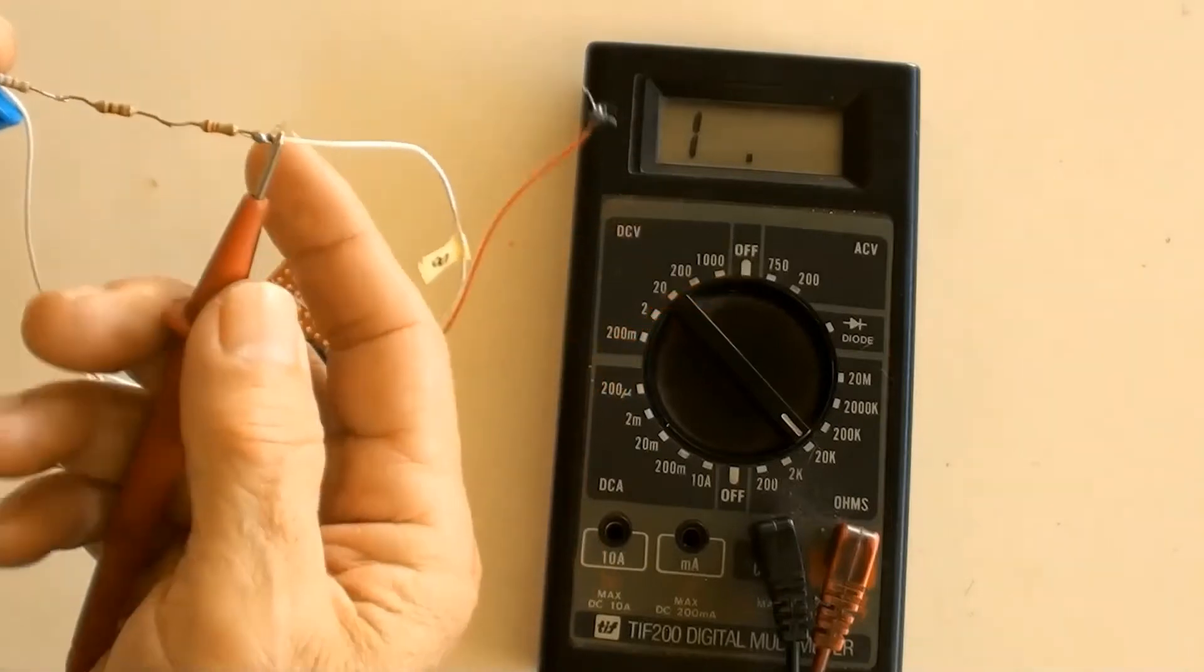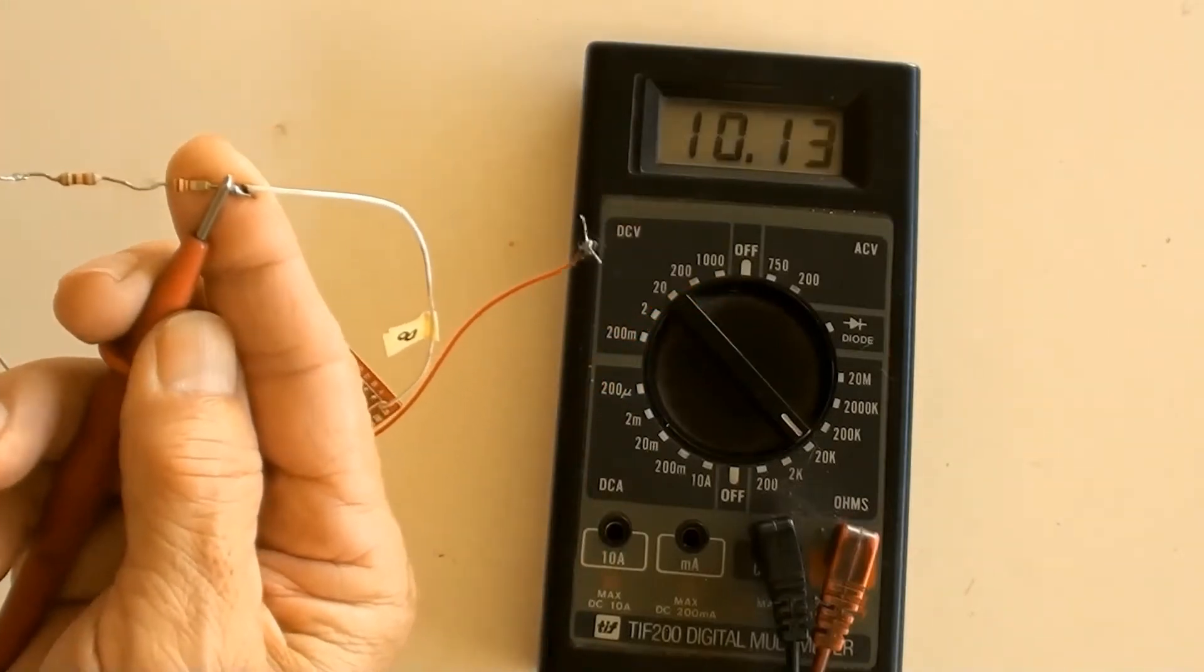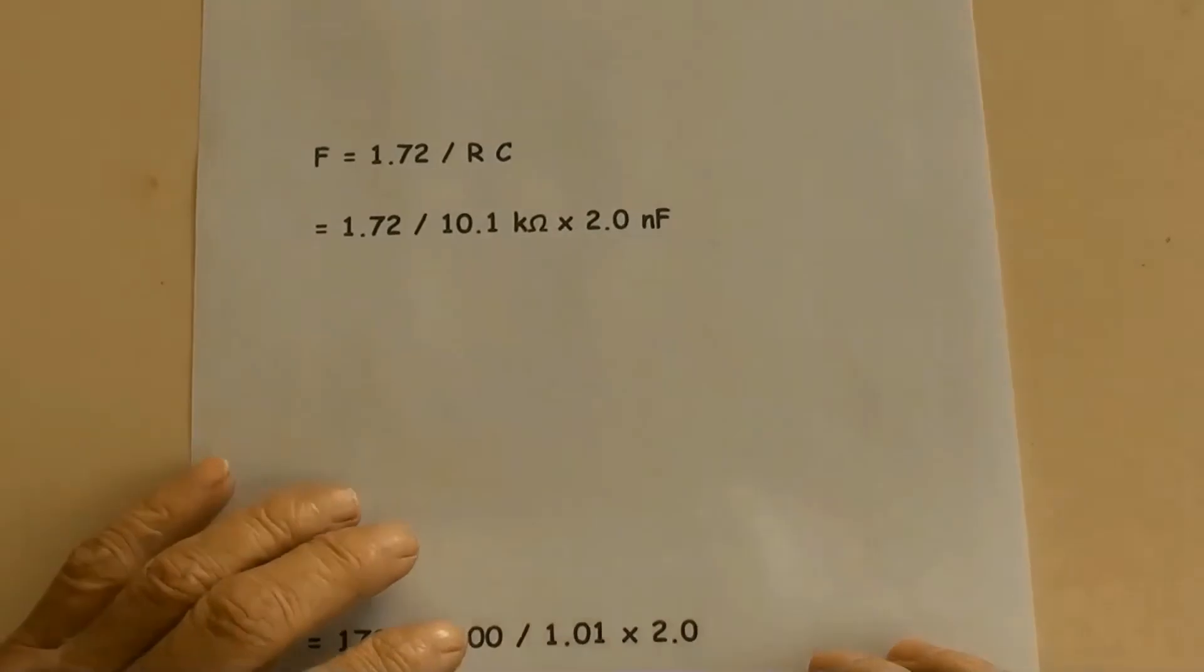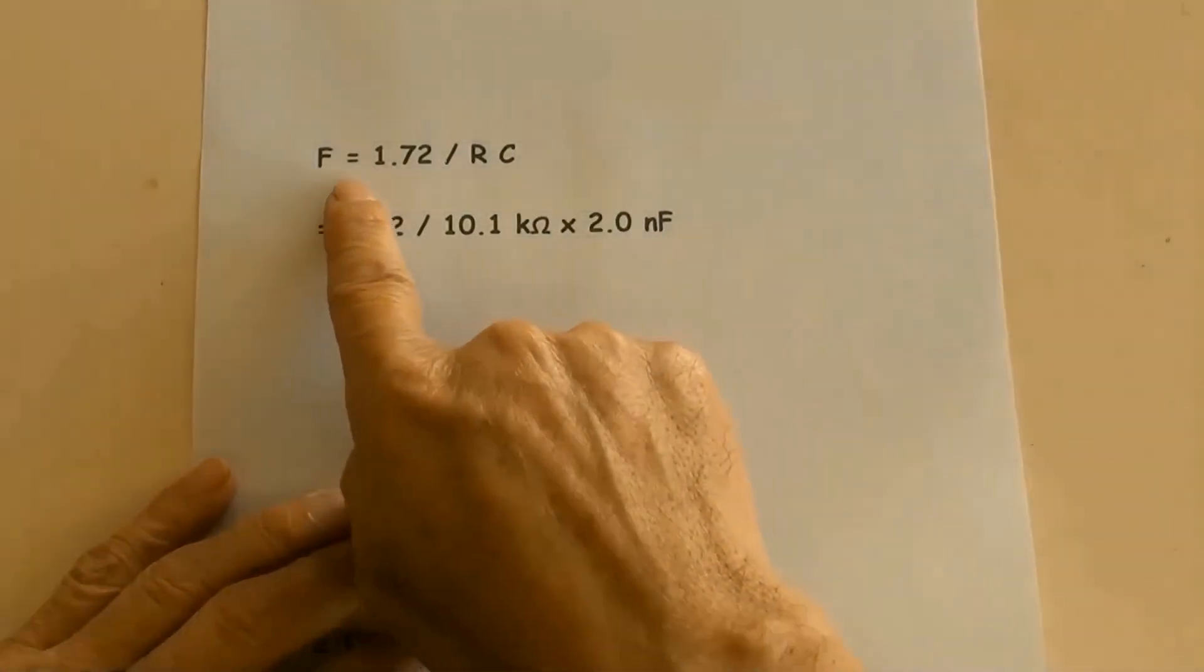The resistors combination value is 10.1k ohms. Now calculating the frequency by using this formula.